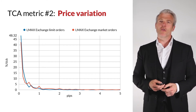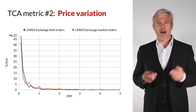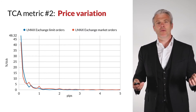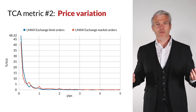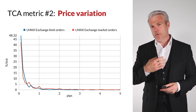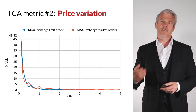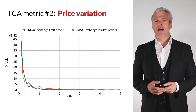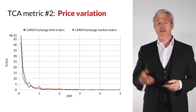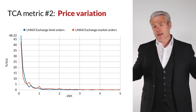Moving on to limit orders on the right-hand side — this graph is actually drawn to scale, and the only lines on the graph are LMAX Exchange. Why is that? With limit orders, there's no price improvement with last-look providers. A liquidity provider would say: we don't need to give price improvement — we're not a central limit order book. If the market is two/four and the client sends a limit order to pay five, we fill them at five. Likewise, if they send a limit order at four and the market dips to three, we fill at four.